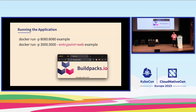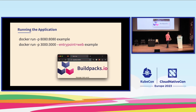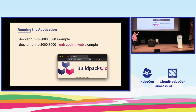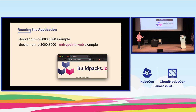In this demo we built a multi-language application: a Go backend and a React frontend in TypeScript. The image produced has two entry points — you can spin up the default entry point which runs the backend, and you can spin up the entry point called 'web' which runs the frontend. You can see a screenshot in the bottom right. We built this quickly with just pack build example from a multi-language mono repo.